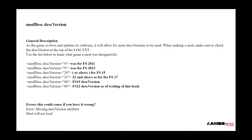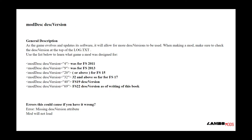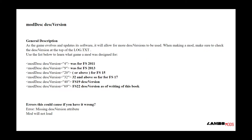ModDisk version — general description. As the game evolves and updates its software, it will allow for more desk versions to be used. When making a mod, make sure to check the disk version at the top of the log text that is produced in your Farming Simulator folder. You can see the progression here of ModDisk versions from 2011 all the way up to now, and it seems to be changing pretty rapidly. So check this pretty often, as it could lead to issues and errors when loading your mod — such as an error saying 'missing disk version attribute,' or the mod just won't load.